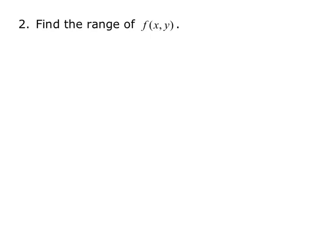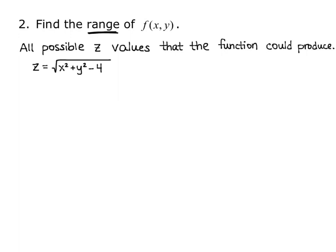Now, we want to find the range of f of x, y. We know that the range is all possible output values of a function. In this case, all possible z values that the function could produce. The function given to us is z equals the square root of x squared plus y squared minus 4.